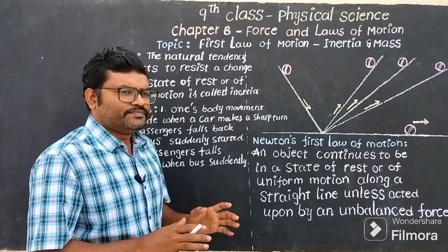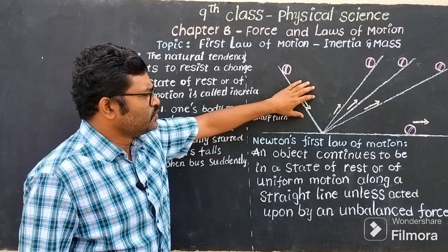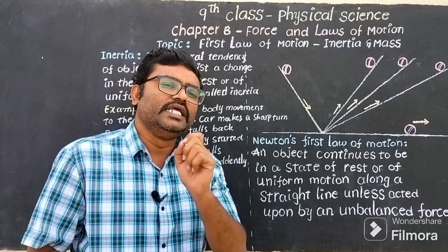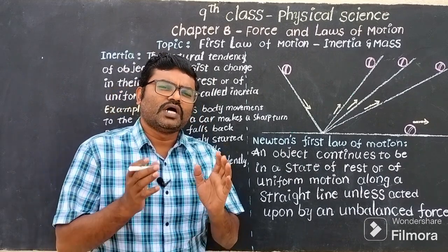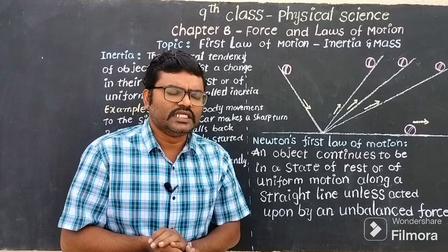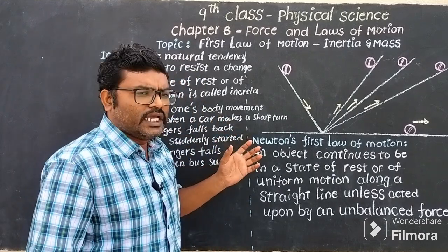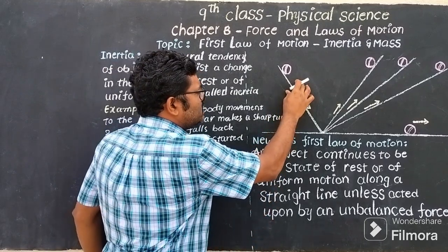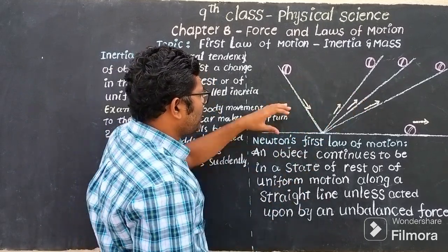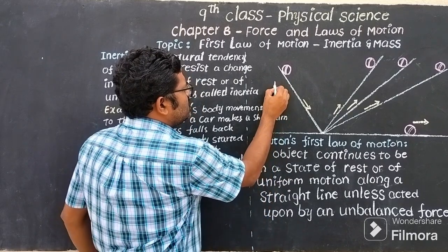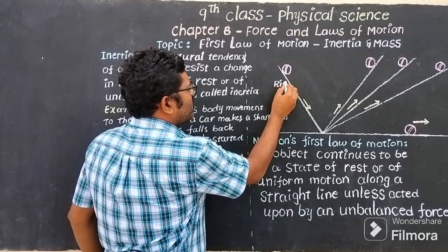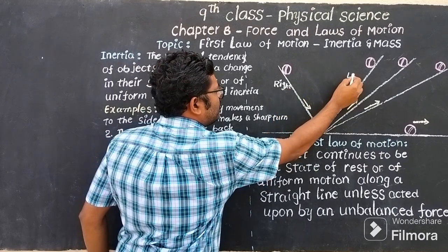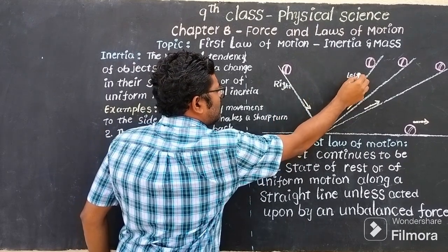Let's begin. Here is an activity done by Galileo. He took an inclined plane — consider two inclined planes: one on the right-hand side and one on the left-hand side, both at an inclination of 120 degrees.